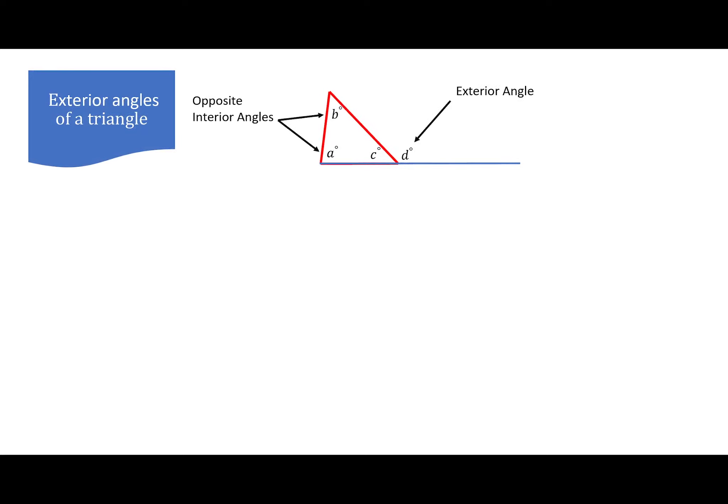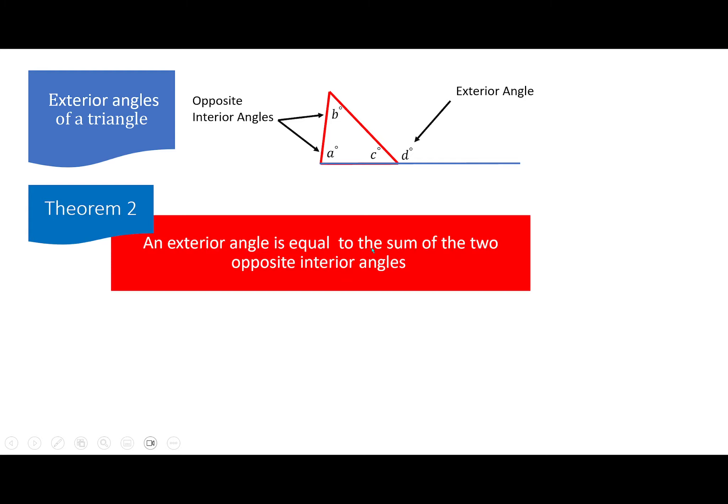Exterior angles of a triangle. Now if you have a triangle and you extend one of the edges, one of the sides, you create an outside, it's called exterior angle. This one here. These two are called, the three of them are interior, but these two are called opposite interior angles. Theorem two: an exterior angle is equal to the sum of the two opposite interior angles. So D here is equal to A plus B.